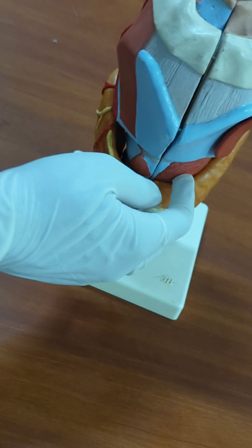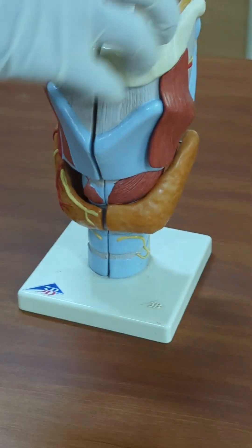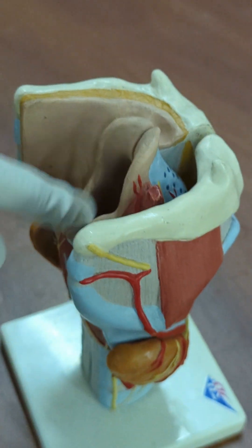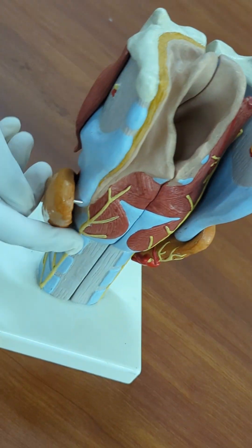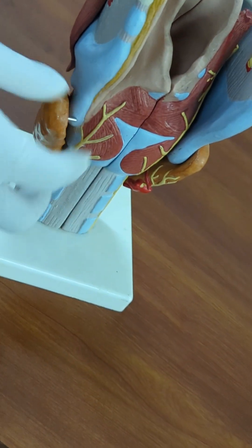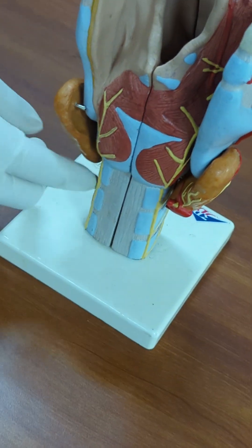And this is the cricothyroid muscle, this is the laryngeal inlet, and this is the nerve which is coming here, this is the recurrent laryngeal nerve, this is the left recurrent laryngeal nerve.